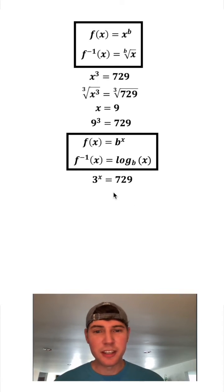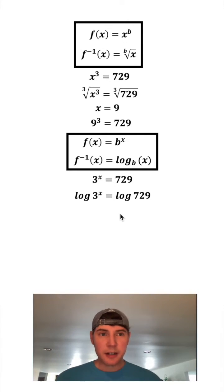Now let's look at this one. If we have 3 to the x equals 729, we're going to take the log of both sides. The log of 3 to the x equals log of 729. I have other videos explaining this.